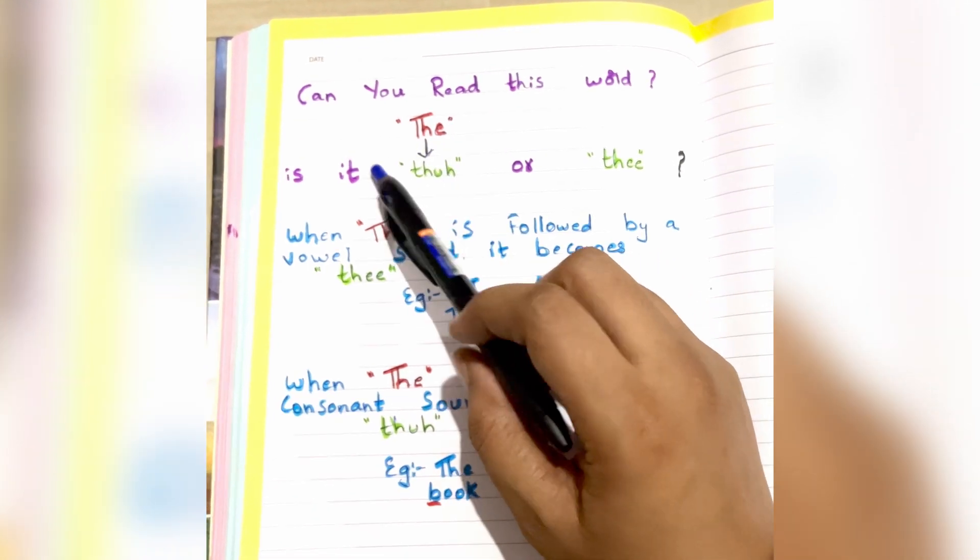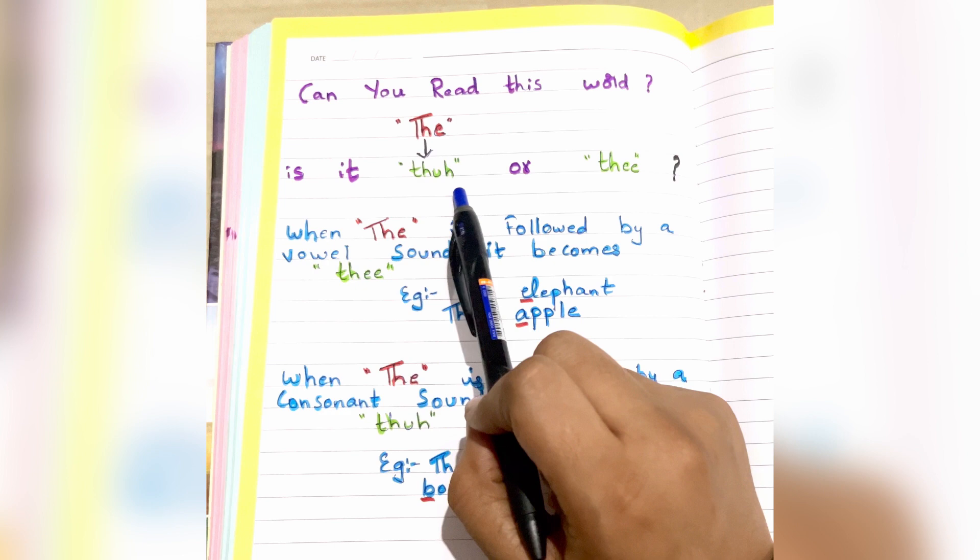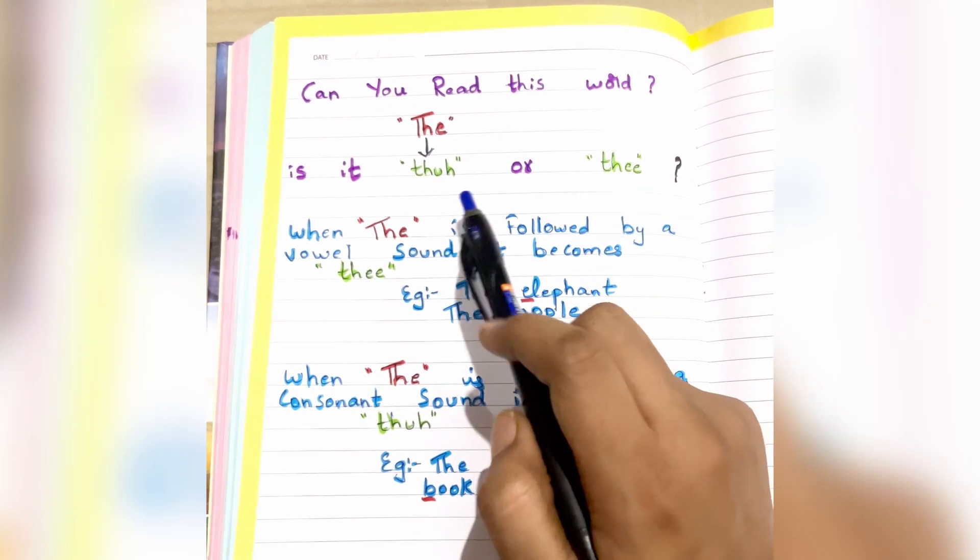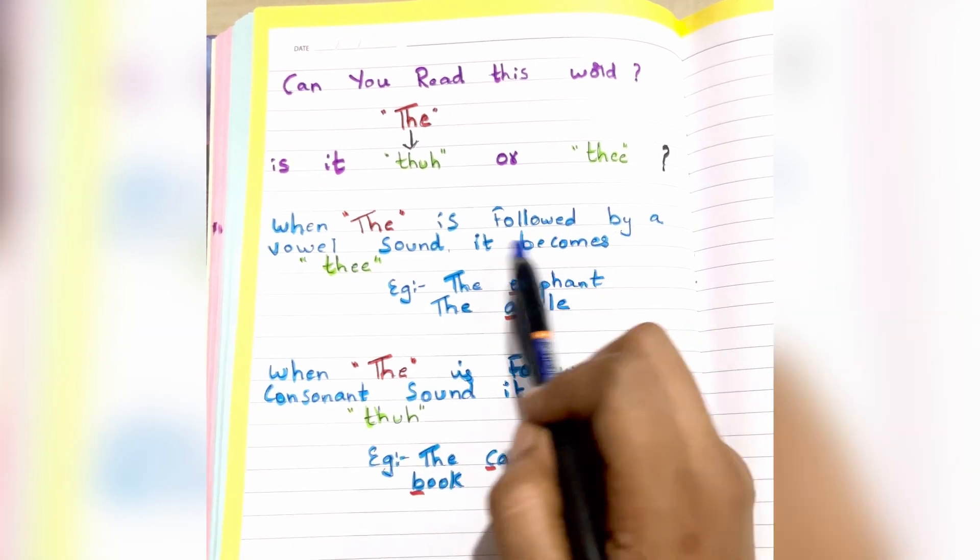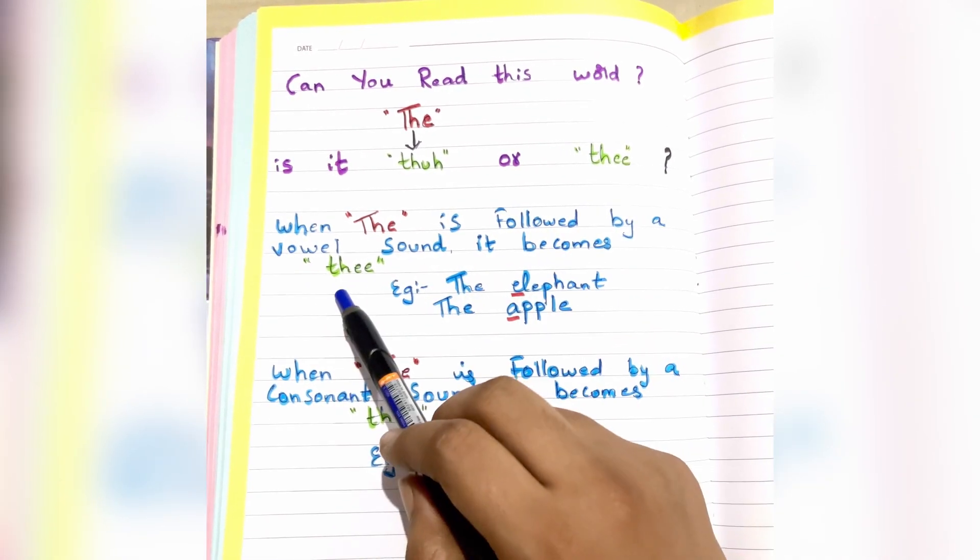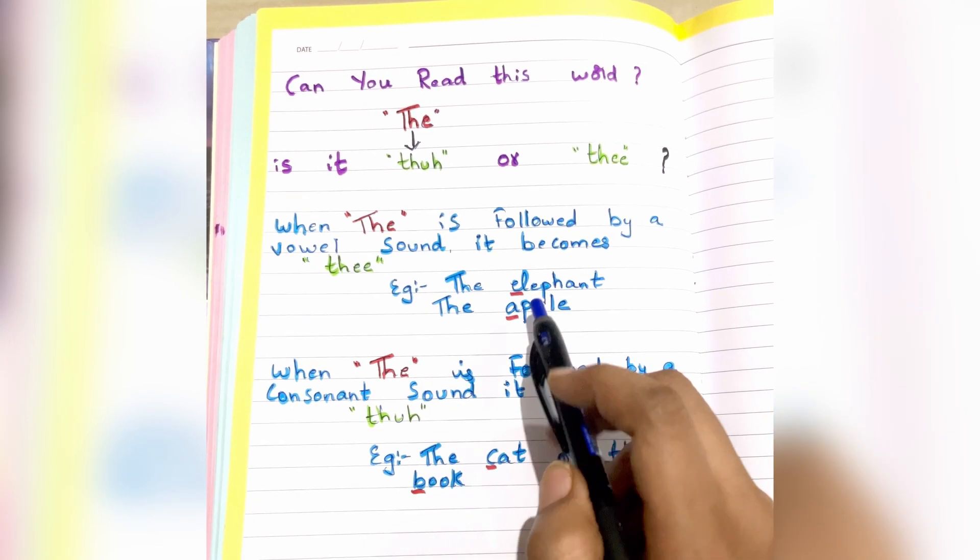Hi friends, welcome to my channel. Can you read this word T-H-E? Is it 'thuh' or 'thee'? Let's see the difference. When 'the' is followed by a vowel sound, it becomes 'thee'. For example: the elephant, the apple.